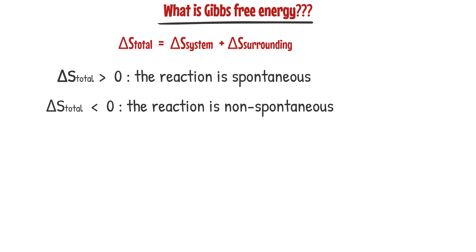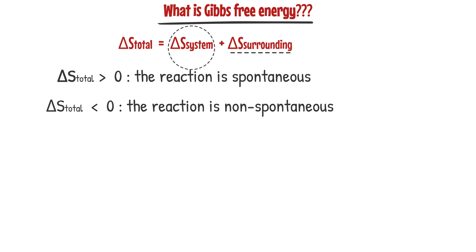The problem with the equation used to calculate the total entropy change accompanying a chemical reaction is that you have to know the change in the system and the change in the surroundings. But chemists are usually interested in the system of reactants and products, rather than having to consider the energy changes of the surroundings. Free energy helps us to know if a reaction is spontaneous or non-spontaneous by considering the change of the system only.